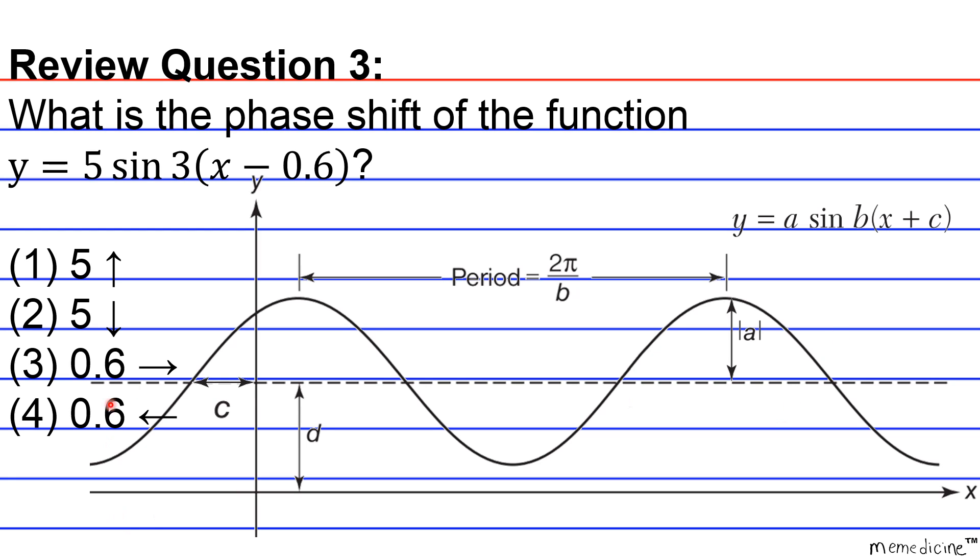Okay, so our phase shift C here represents the concept of a phase shift. Phase shift positive means a move left, and negative means a move to the right. I know this might seem kind of backwards, but trust me, that's what occurs.